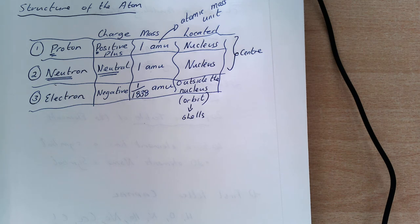Neutron, neutral, mass of one, located in the nucleus. My electron then is a negative charge, 1838 times smaller, and it is located outside the nucleus. It orbits the nucleus in what we call shells.